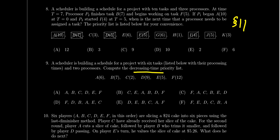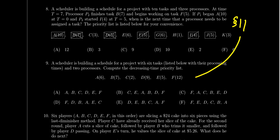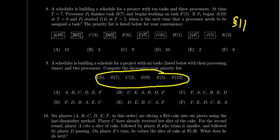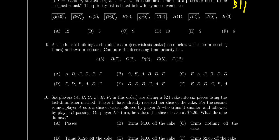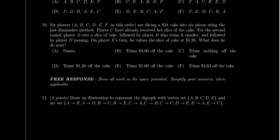Question nine covers the decreasing time algorithm from lesson 11. Given tasks A through F with their processing times (not in order), you construct the decreasing time priority list by placing the highest processing time first, then the next highest, and so on. No precedence relations are needed for the decreasing time priority list — unlike the critical time, for which you'd need the digraph.